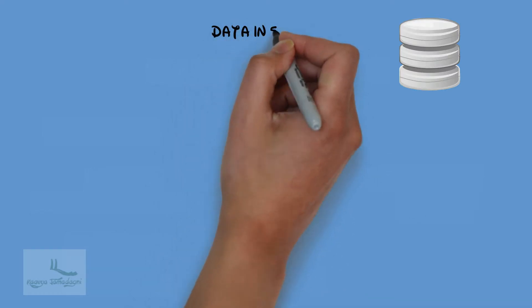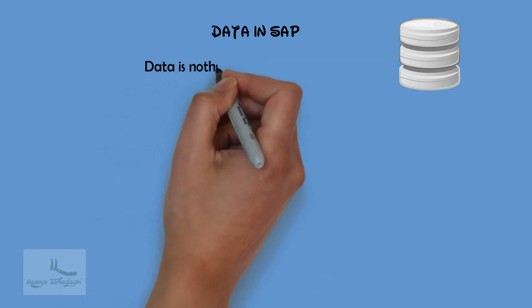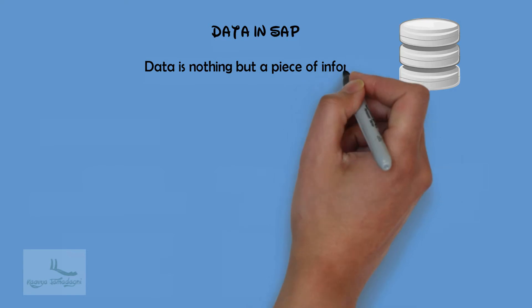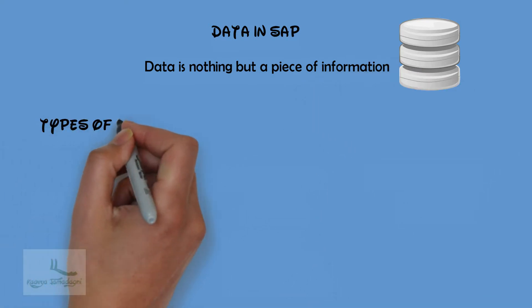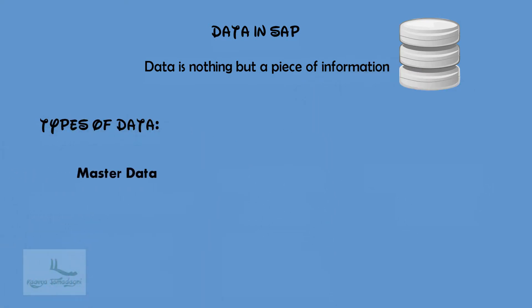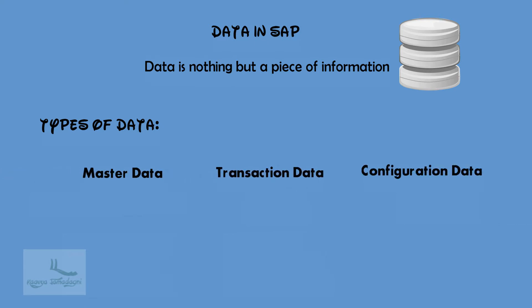Like any other system, SAP system deals with a lot of data. So, what is data? Data is nothing but a piece of information. And there are three types of data available in SAP: first is master data, second is transactional data, and third is customization or development data. Let's look at each type very closely.